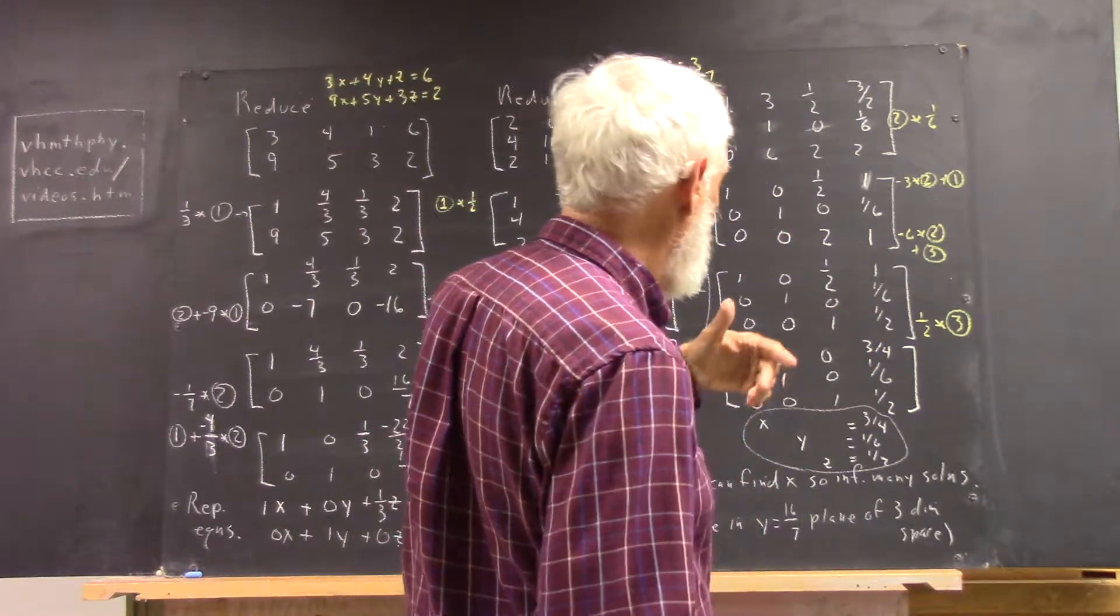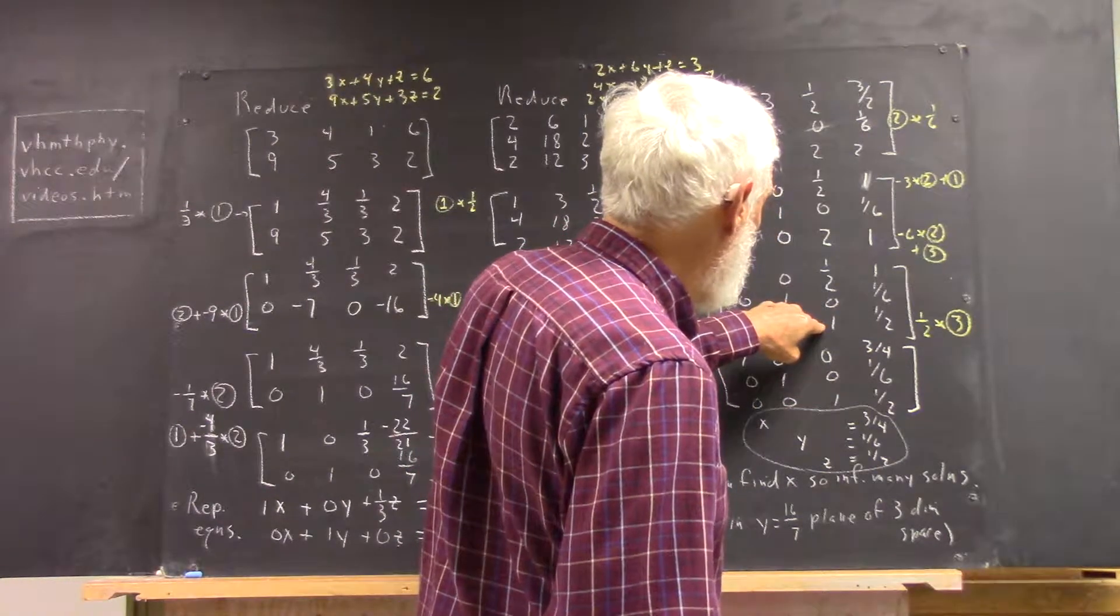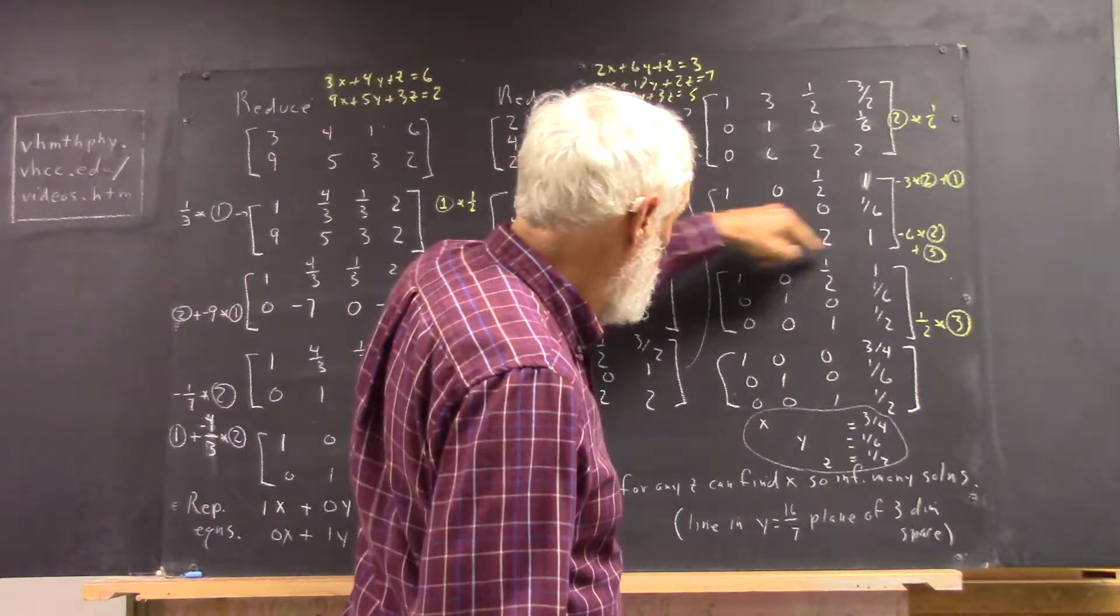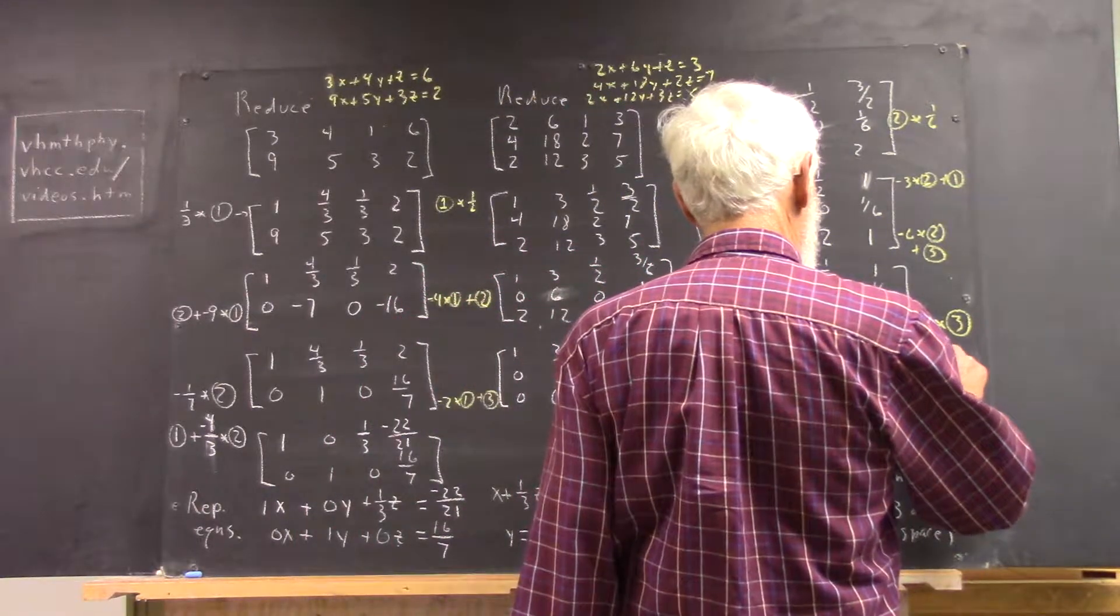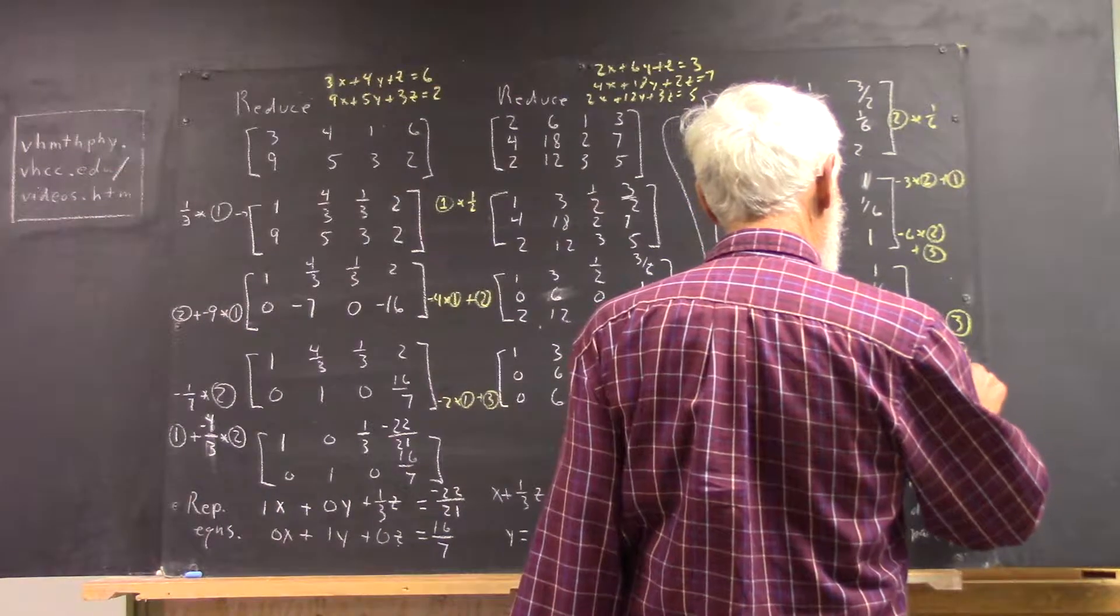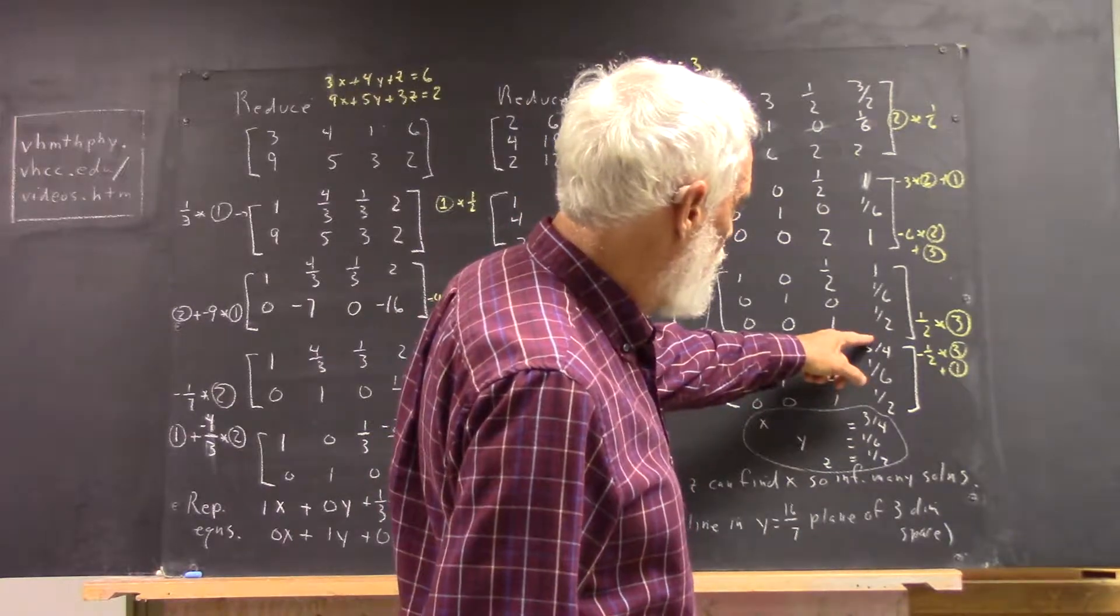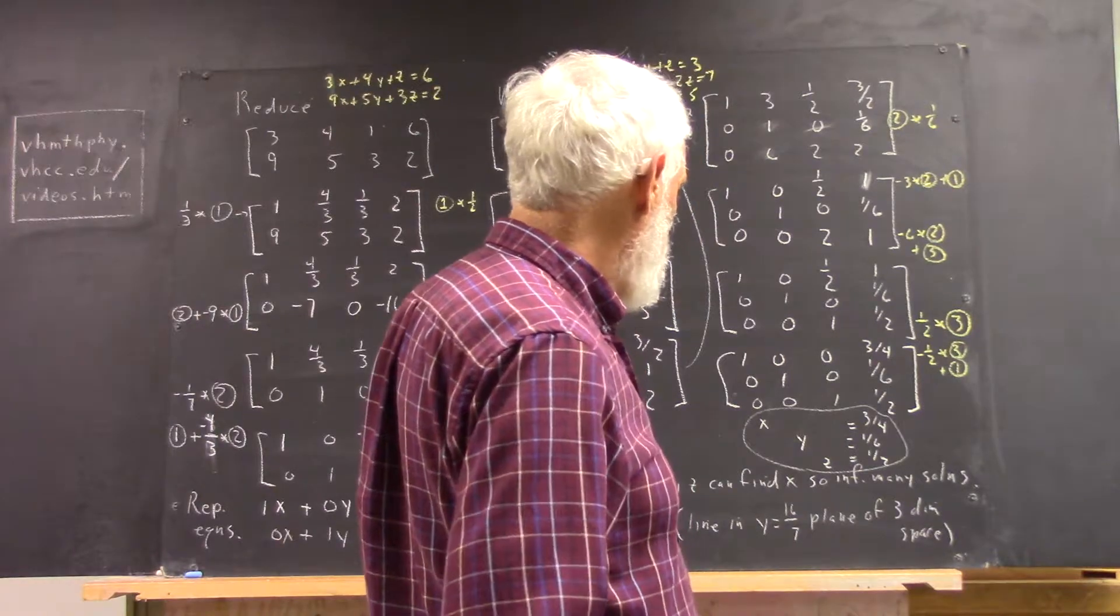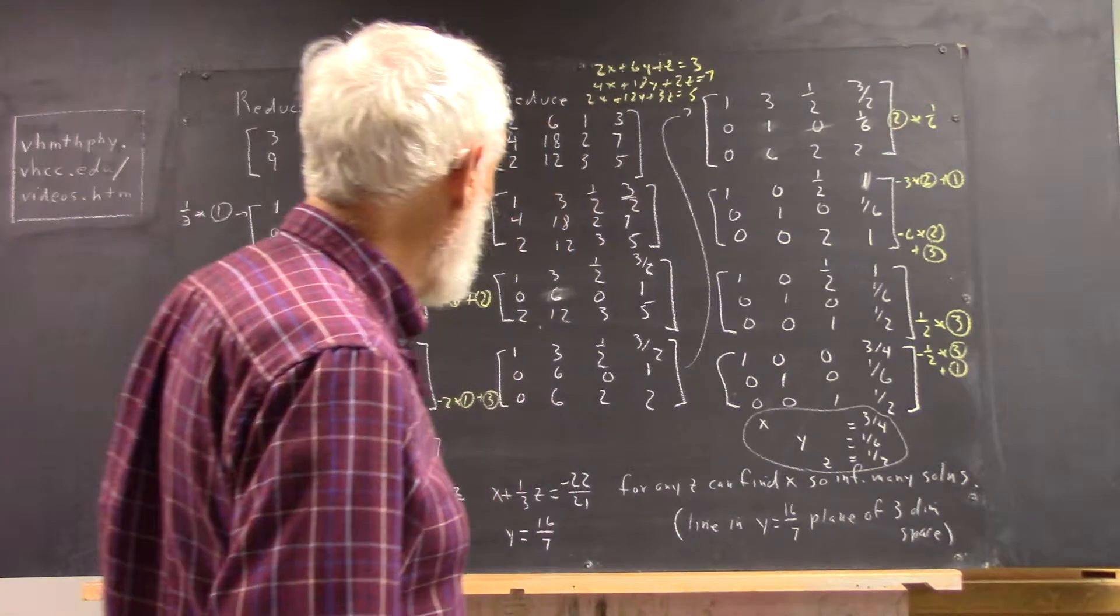Then, we're home, almost free. We just add negative half of that third row to the first row, and we're going to have a 0 here, and we'll have the whole identity matrix. So, it's negative 1 half of the third plus the first. And, of course, negative 1 half times 1 half is negative 1 fourth, added to 1 gives us our 3 fourths. So, now, we have x equals 3 fourths, y equals 1 sixth, z equals 1 half.